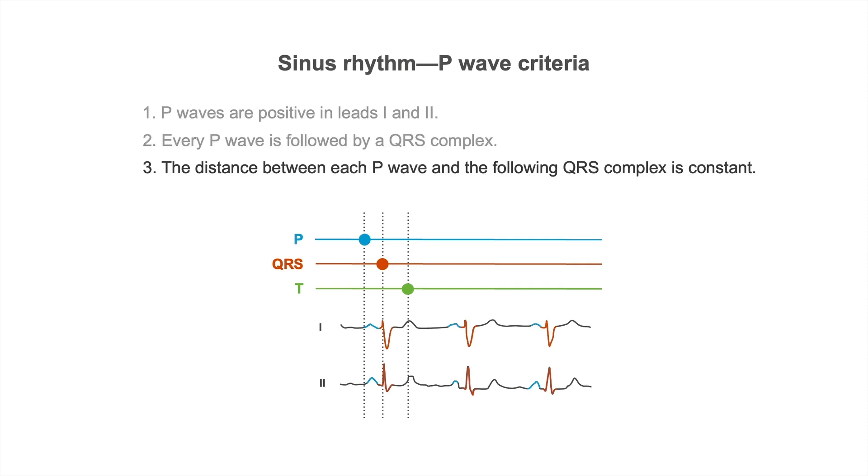And criteria number 3 says the distance between each P wave and the following QRS complex is constant. So this distance is indicated by this purple double arrow here, and this purple double arrow is the same here as it is here and here. The distance from P to QRS, as we already know, is measured from the beginning of the P wave until the beginning of the QRS complex.